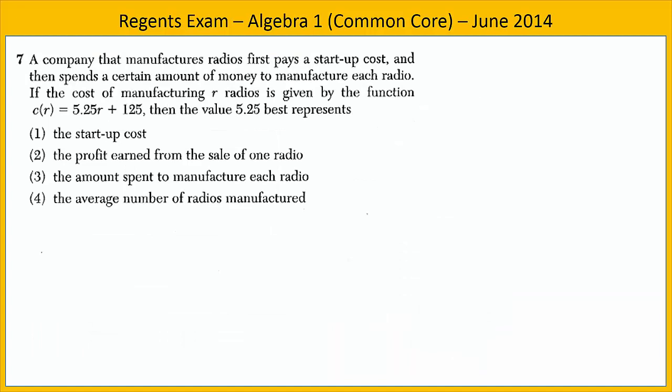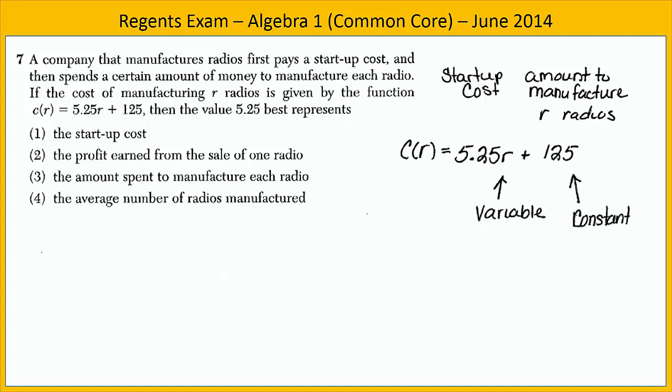In exercise seven, we're told that a company manufactures radios. They pay a startup cost and then spend a certain amount of money to manufacture each radio. How many radios do they manufacture? Well, they manufacture R of them. We're given a function that represents this scenario. Take a look at the function carefully. Notice that we have a variable and a constant. The variable R represents the number of radios that we manufacture. How much is it per radio being manufactured? $5.25. $125 is a constant amount. That must be the startup cost.